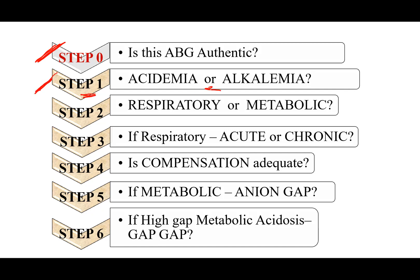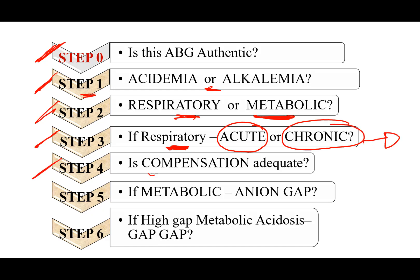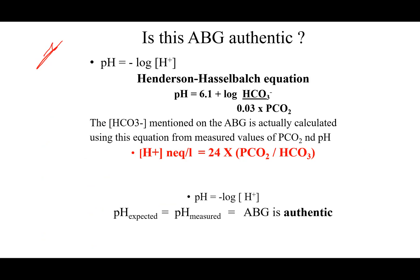Step one: acidemia versus alkalemia. Step two: respiratory versus metabolic abnormality. Step three: if it is respiratory, determine if it is acute or chronic — we will mention this step later. Step four: if it is metabolic, is it compensated or not? If metabolic acidosis, is it high or normal anion gap? And if it is high anion gap metabolic acidosis, what is the gap-gap ratio?